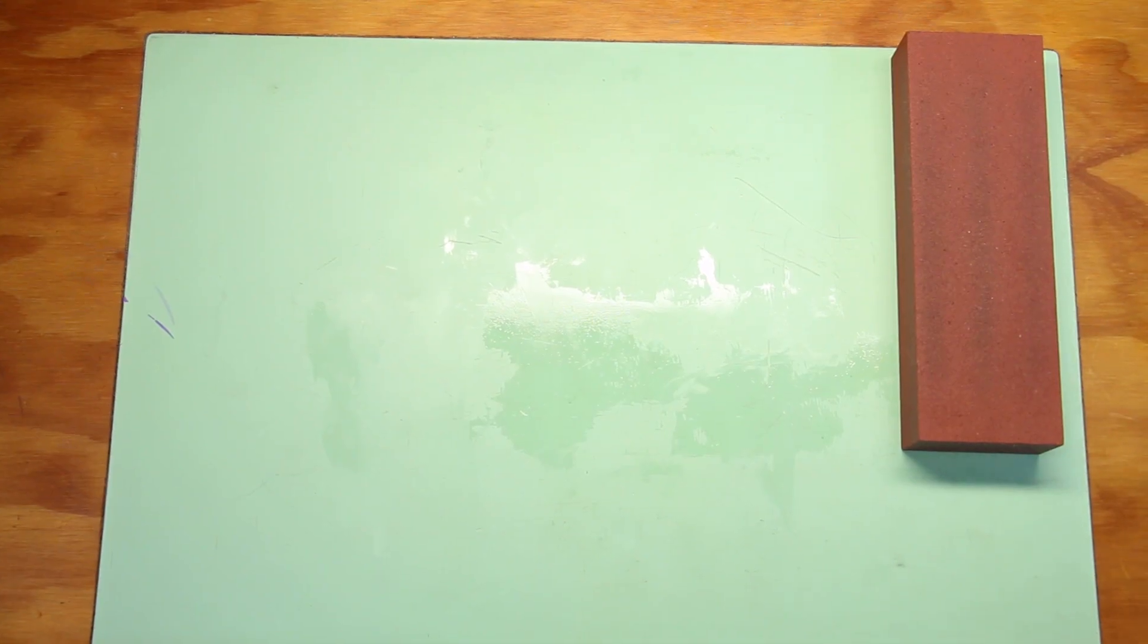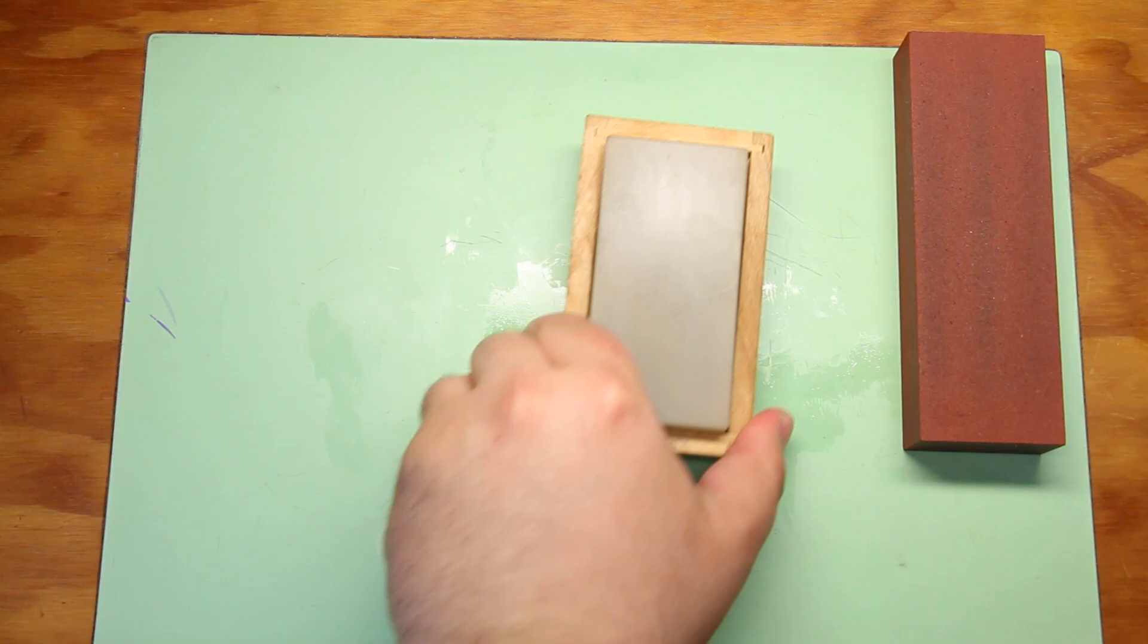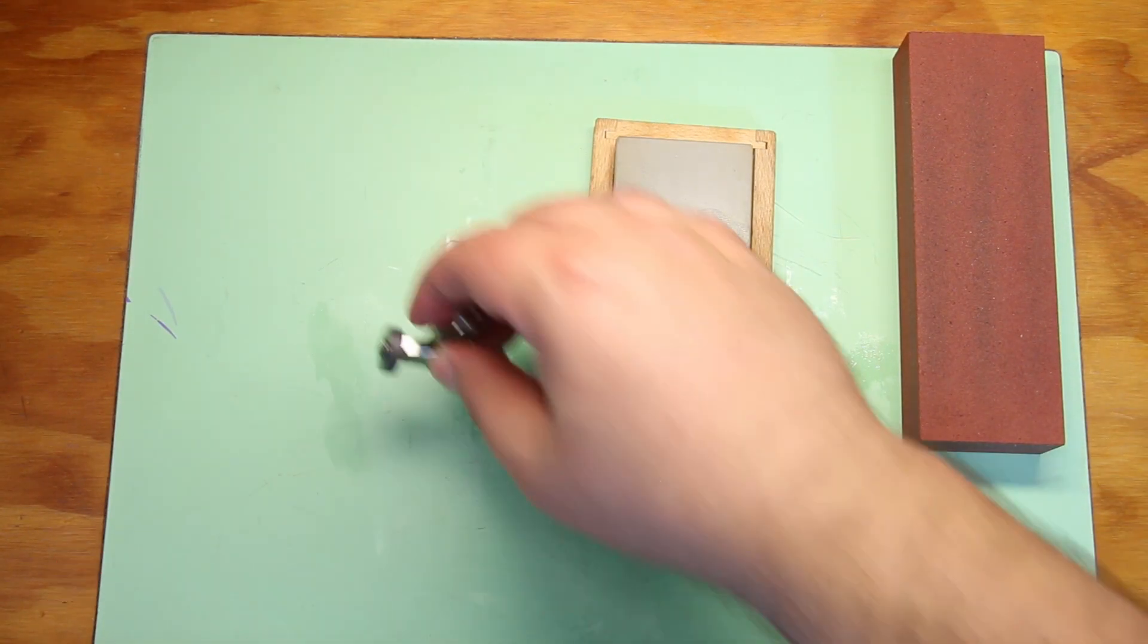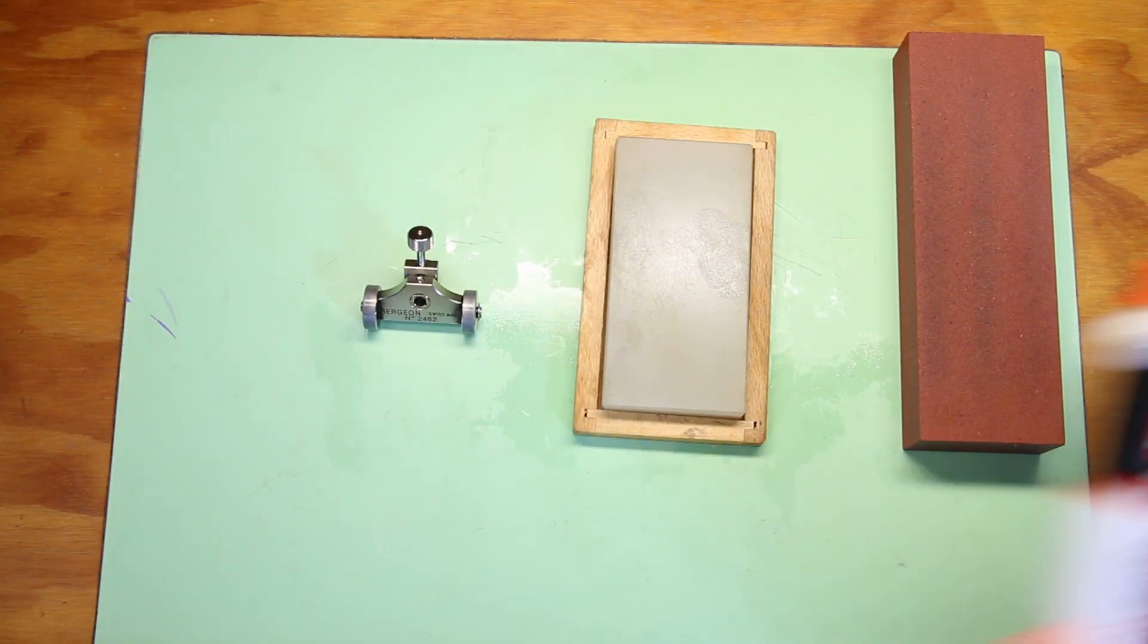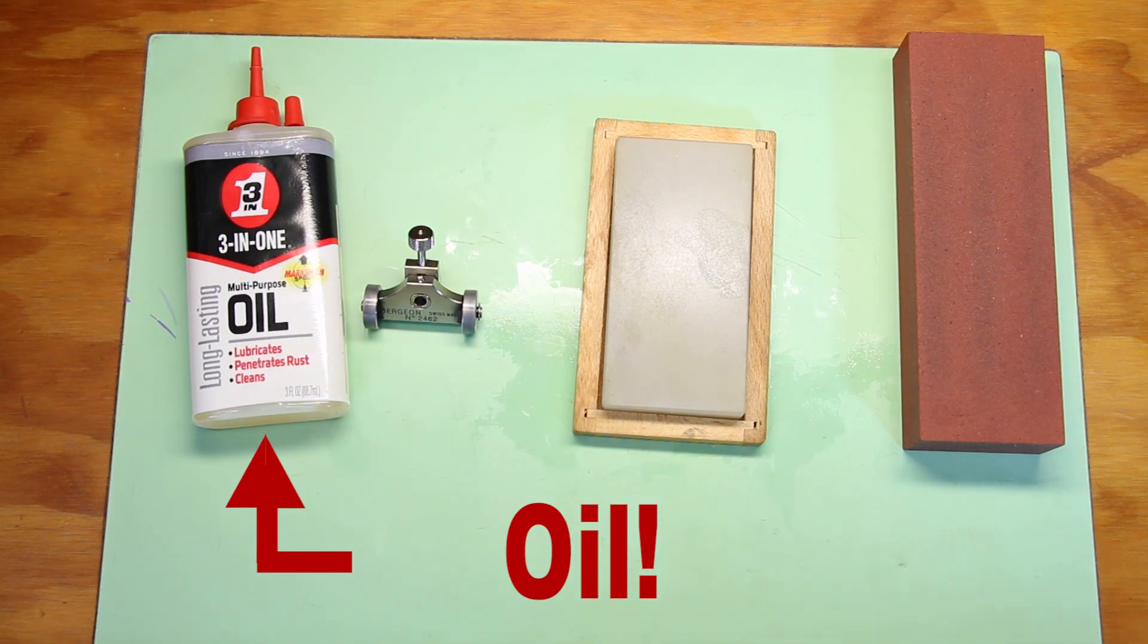So to prepare these gravers you'll need an India stone, a Kansas stone, sharpening tool holder, some oil, some gravers.